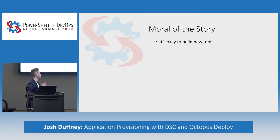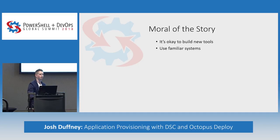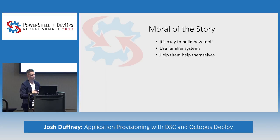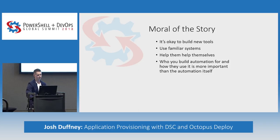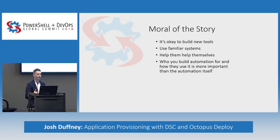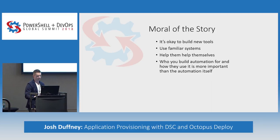The moral of the story: it's okay to build new tools using familiar systems — that's a great advantage because your entire team doesn't need to skill up on something new. This was just PowerShell and Octopus, tools we already knew intimately. Help your customers help themselves: automating the provisioning gave us bandwidth to do the config management work. And who you build automation for and how they use it is way more important than the automation itself. If you write a cool function but still have to run it yourself, you still have to run it — put that extra effort in to make it usable from your customer's standpoint.